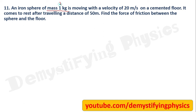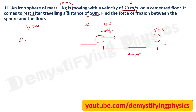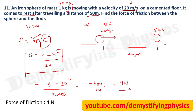An iron sphere of mass 1 kg moves at 20 m/s on a cemented floor and comes to rest after traveling 50 meters. u = 20 m/s, v = 0, s = 50 m. Find acceleration using the third equation of motion: v² - u² = 2as, so a = (0 - 400) / (2 × 50) = -4 m/s². Force = ma = 1 × (-4) = -4 Newton. But since the question asks for the force of friction, the answer is stated as positive: 4 Newton.